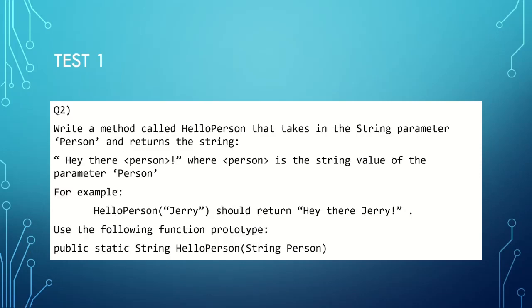For question two, we're going to be writing a method called helloPerson that takes in the string parameter person and returns the string 'Hey, there person', where person is the string value of the parameter person. That sounds really complicated, but in essence, what it is, is that when you call your function helloPerson and example string Jerry is given, it should return 'Hey, there Jerry' with an exclamation mark.